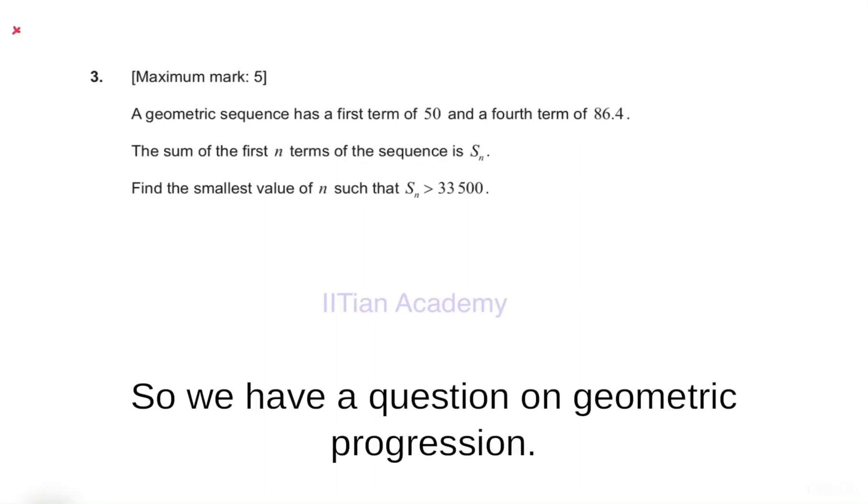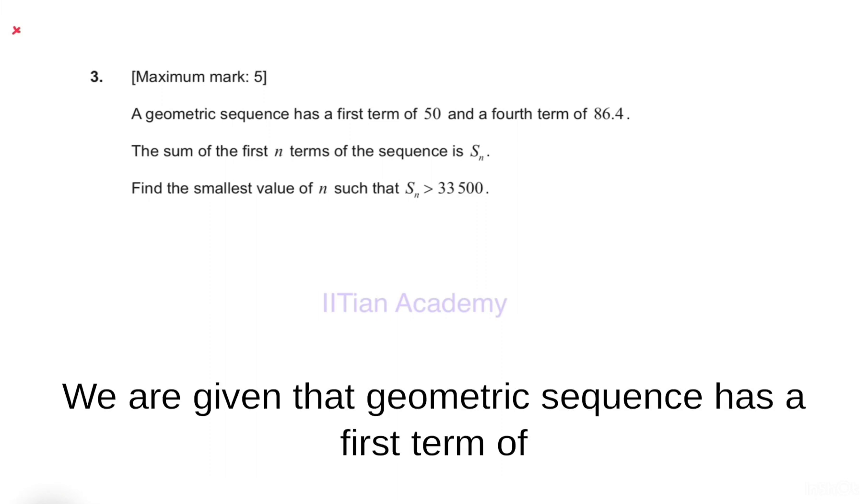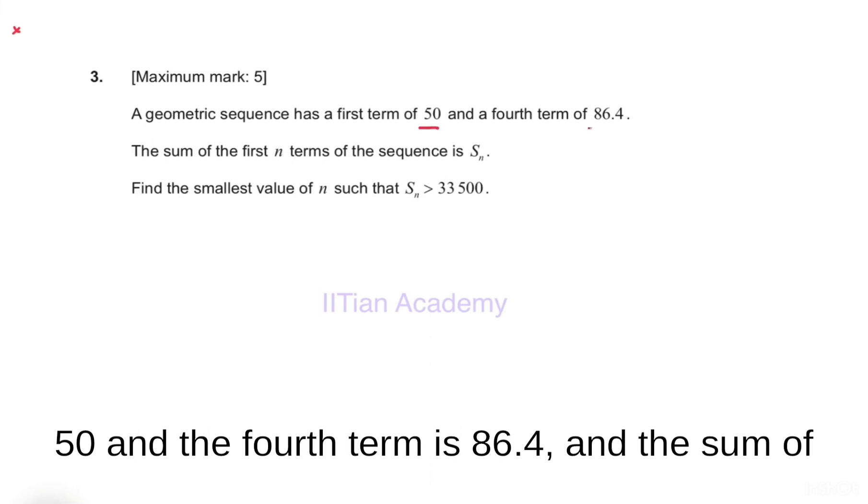Hello friends, we have a question on geometric progression. We are given that a geometric sequence has a first term of 50 and the fourth term is 86.4.